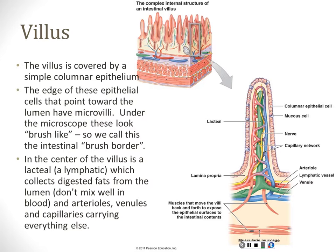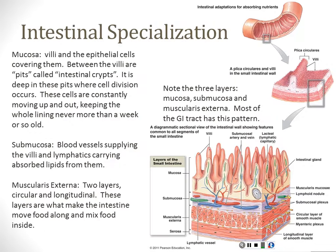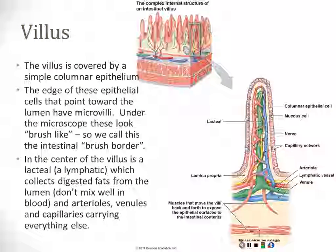How long does it take for those cells to be replaced? Days — it's about a five-day journey from the crypt to the tip. So you never have an intestinal brush border cell that's more than a week old. They're always just being replaced, and their parts are recycled by being reabsorbed and rebuilt.